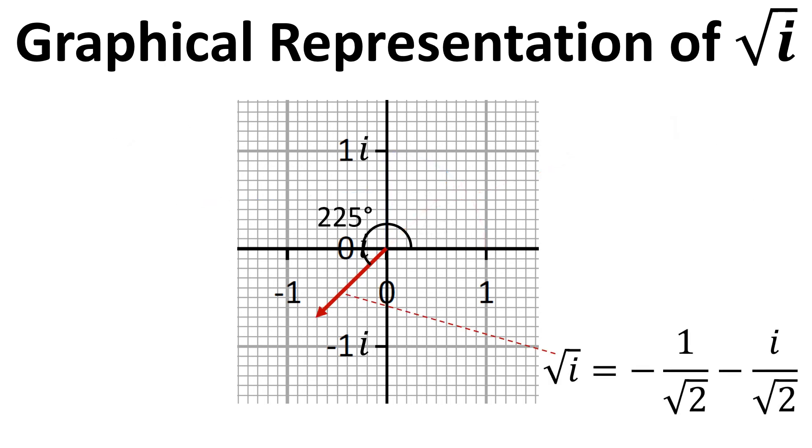Another idea here is that we have the root of i equals minus 1 over root 2 minus i over root 2. This is a rotation of 225 degrees and so that gives us that rotation but if we multiply root i by root i we go around another 225 degrees and we get back to one i. So again it's a way of thinking about a graphical approach to understanding the square root of i.